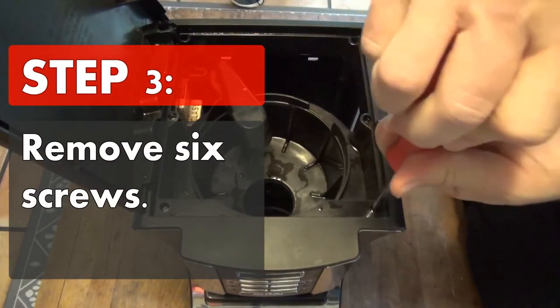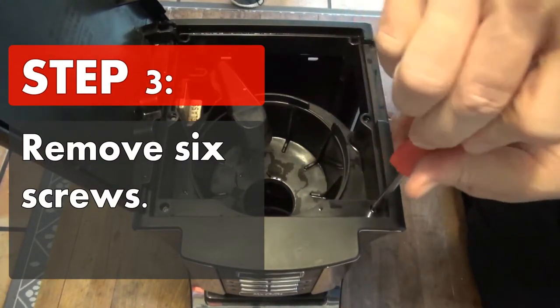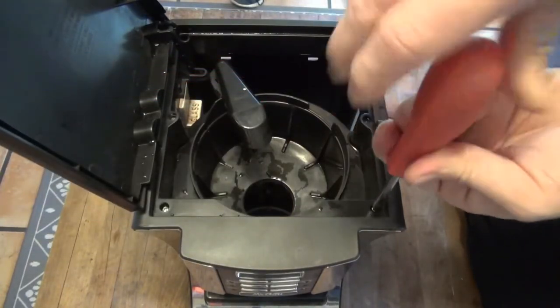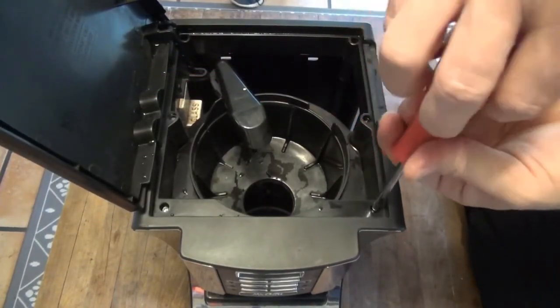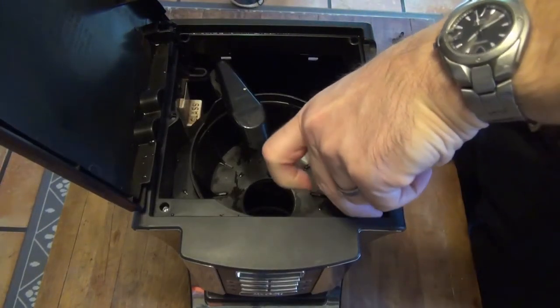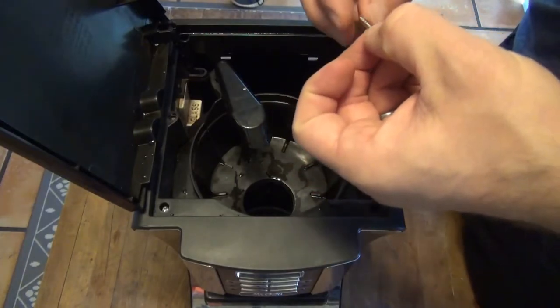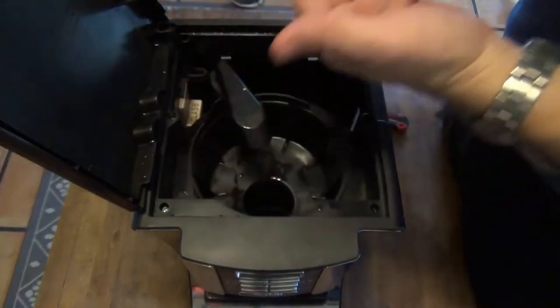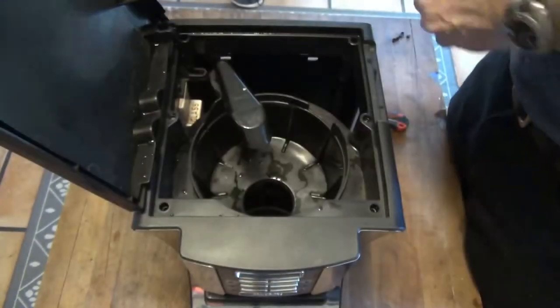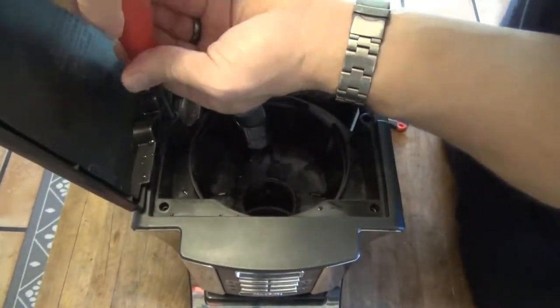Now you're going to want to remove the six screws that are on the top of the machine. You can do this with your standard Phillips head screwdriver. They're just tiny screws like that. You're going to need to get all six of them out of there so you can remove the top of the machine.